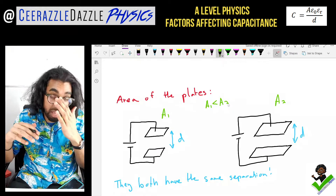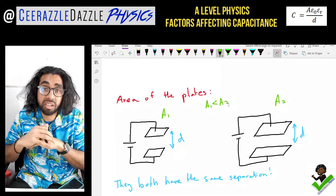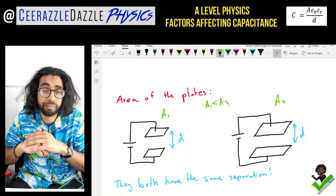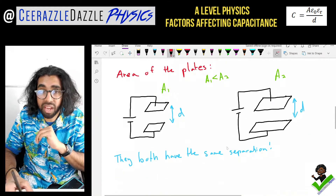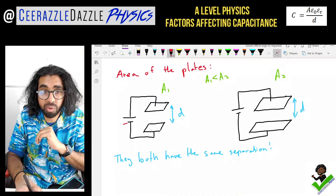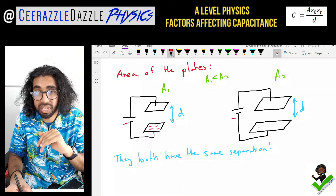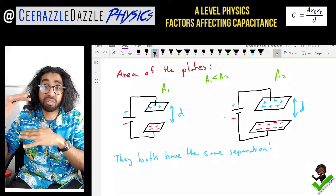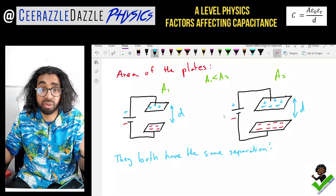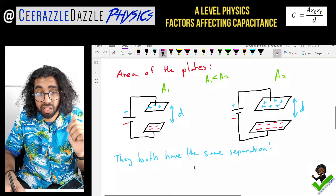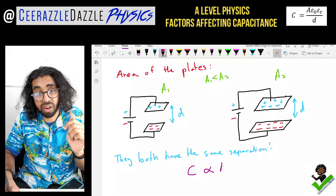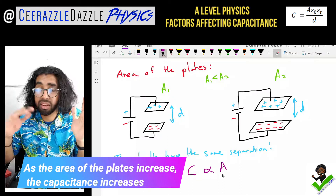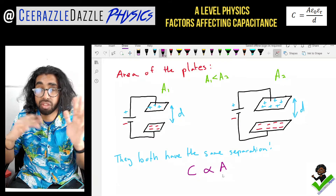The question is: which capacitor can store the most charge — the one with the most area or the least? Because there's more area, you can store more charge. On the larger plate there's more space to build up electrons, so more charge can be stored. This leads us to the statement: capacitance is proportional to the area of the plate. The greater the area of the plate, the greater the capacitance.